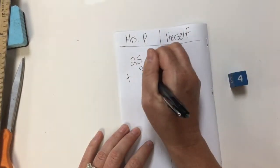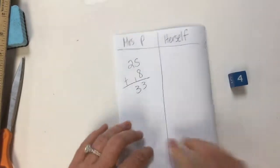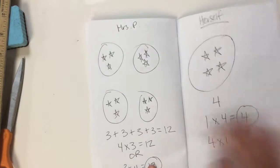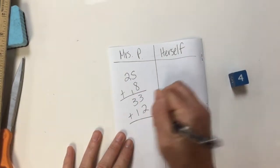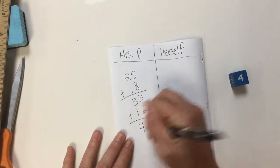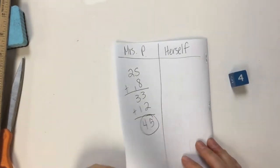So I can add them up like this. 8 plus 5. And then 12. Or you could always add your scores up all together. So now I need to find herself's scores.